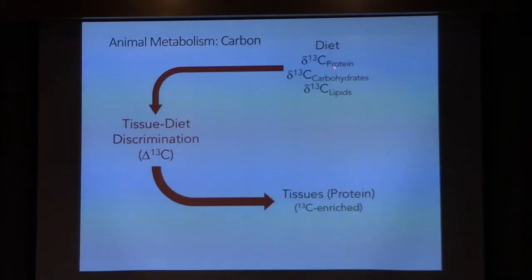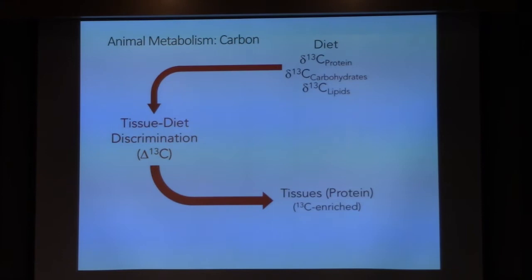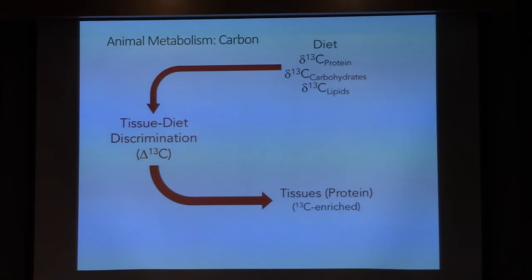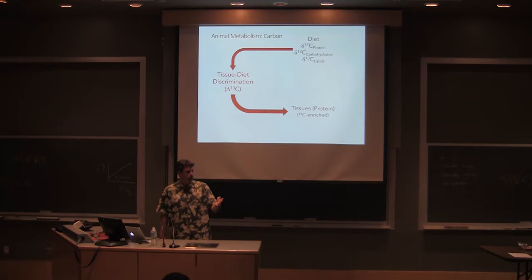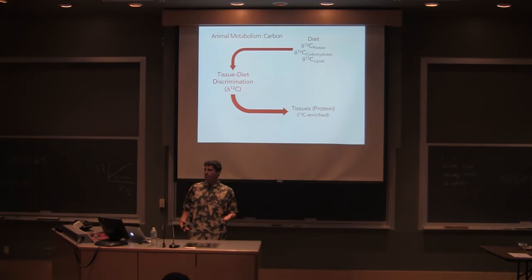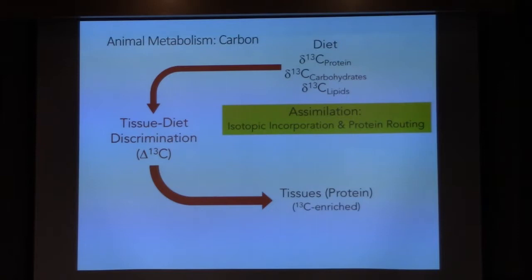The diet is made of protein, carbohydrates, and fats with different isotopic compositions. There's some discrimination that occurs and we use these things to build our tissues because that's what we measure as isotopic ecologists. We measure tissues like bone collagen, hair, blood plasma, red blood cells, liver, and muscle. Those things are largely made of protein.